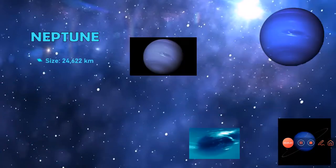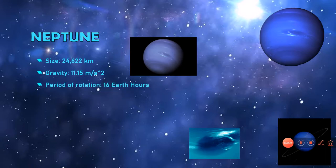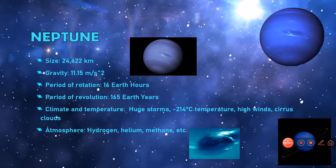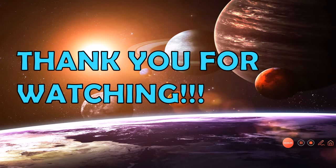Neptune. Size: 24,622 kilometers. Gravity: 11.15 meters per second squared. Period of rotation: 16 Earth hours. Period of revolution, on the other hand, 165 Earth years. Climate and temperature: huge storm clouds, minus 214 degrees Celsius, high winds, surface clouds. Atmosphere: hydrogen, helium, methane, etc. Furthest solar system planet.